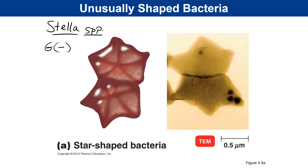Stella bacteria are described to have six prongs that make up their internal assembly, even though the outer structure appears to have a pentagonal or five-sided shape, and they have a flat planar structure three-dimensionally. They don't seem to be pathogenic — they're environmental, found in permafrost ice in Russia, in soil, water, and even in sewage. They exist and are distinctly different from all the others commonly described.